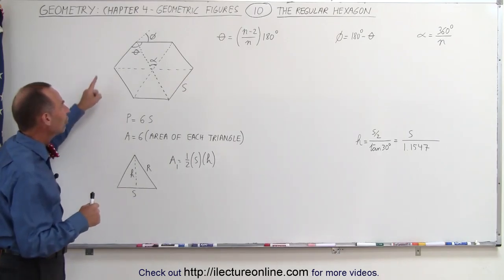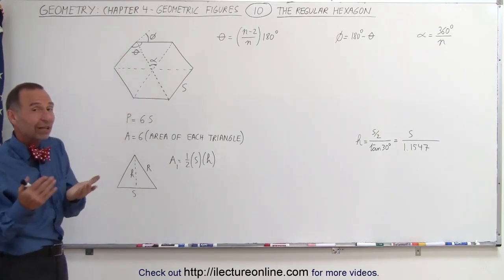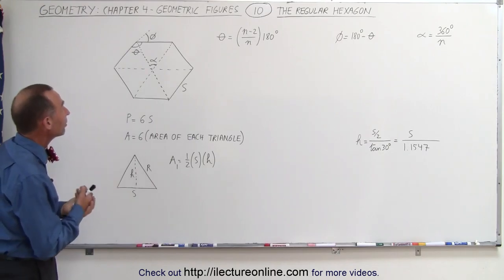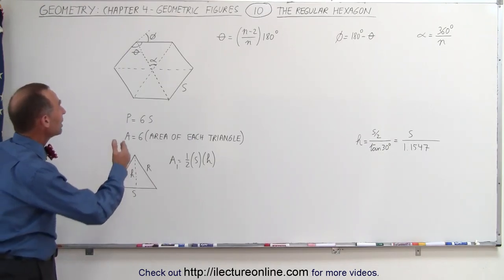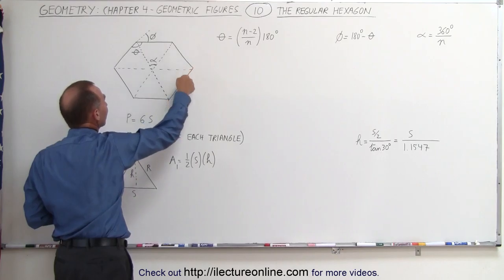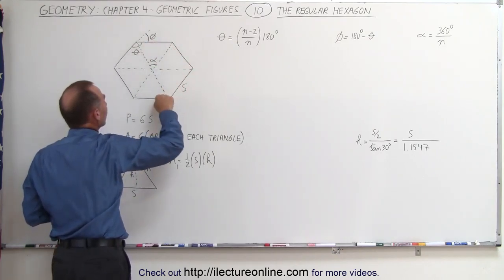But let's now go back to also finding all the angles, because just like we did for the regular pentagon, for the regular hexagon, we need to find the following angles. We need to find each of the six angles, what the size of each one of those are.